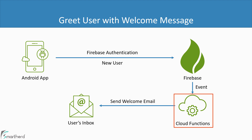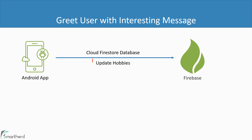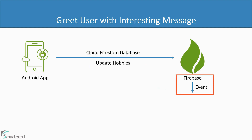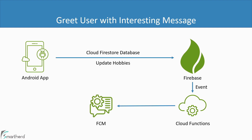The purpose of Cloud Functions is to execute a code written by you to do something in response to any generated Firebase event. Let us take another example: suppose the user updates his hobbies or interests in your application, which will be stored in the Cloud Firestore database. Based on this database update event, an event will be triggered in Firebase. You can then catch this event and trigger a function within Cloud Functions, which will send a push notification to the user using Firebase Cloud Messaging, abbreviated as FCM.